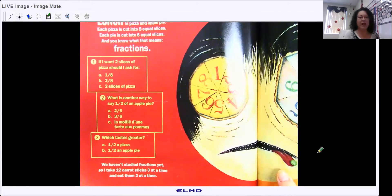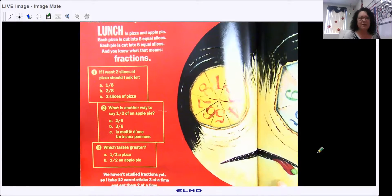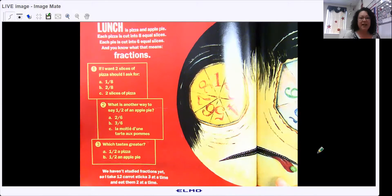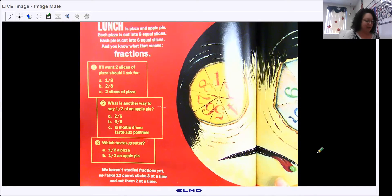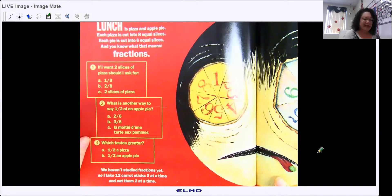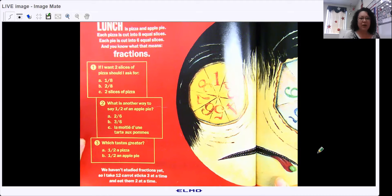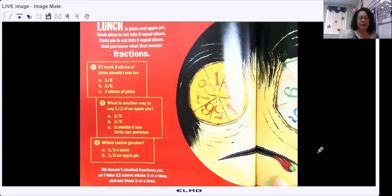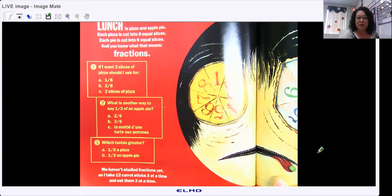Unfortunately for me, lunch is pizza and apple pie. Each pizza is cut into eight equal slices. Each pie is cut into six equal slices. If I want two slices of pizza, should I ask for one eighth, two eighths, two slices of pizza? What is another way to say one half of an apple pie? Two sixths? Three sixths?